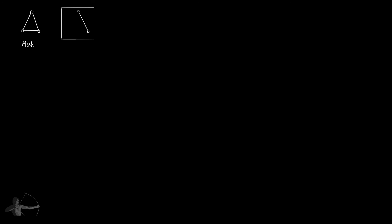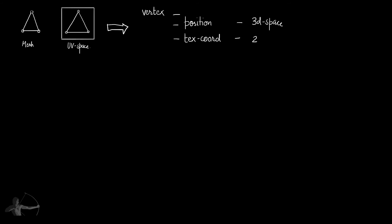As we saw, in UV mapping we assign a coordinate to every vertex of the mesh within the 0 to 1 UV space. If we create a triangle in Maya, Max or Blender, map the UVs, and then import the mesh into Unity, all the UV information comes with the mesh like any other vertex attribute. Every vertex contains position information — where it is located in 3D space — and texture coordinate information — where it is located in 2D UV space — along with normal information and color information.